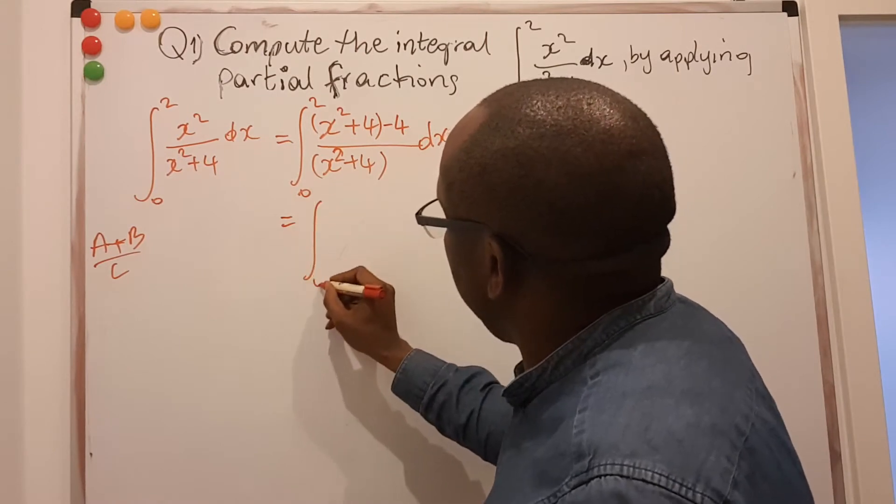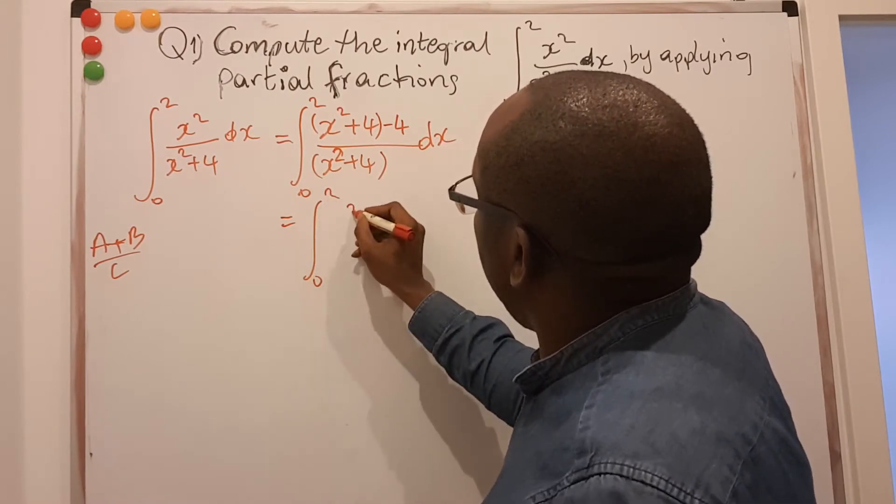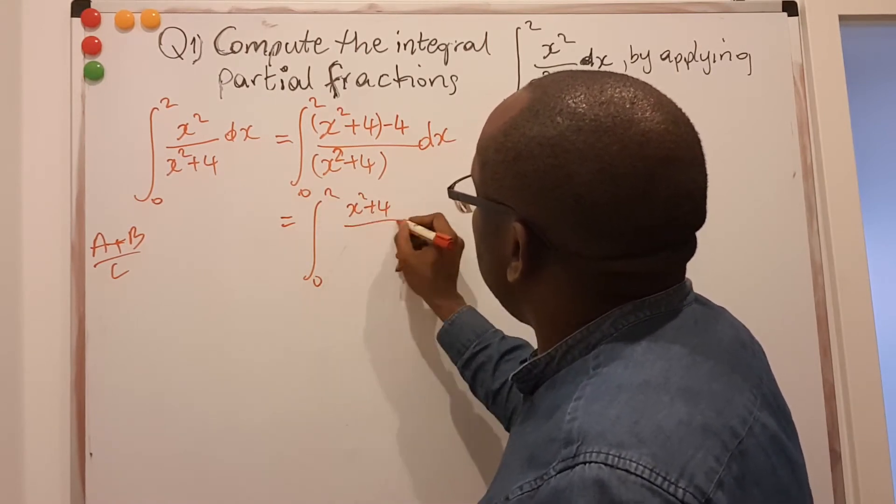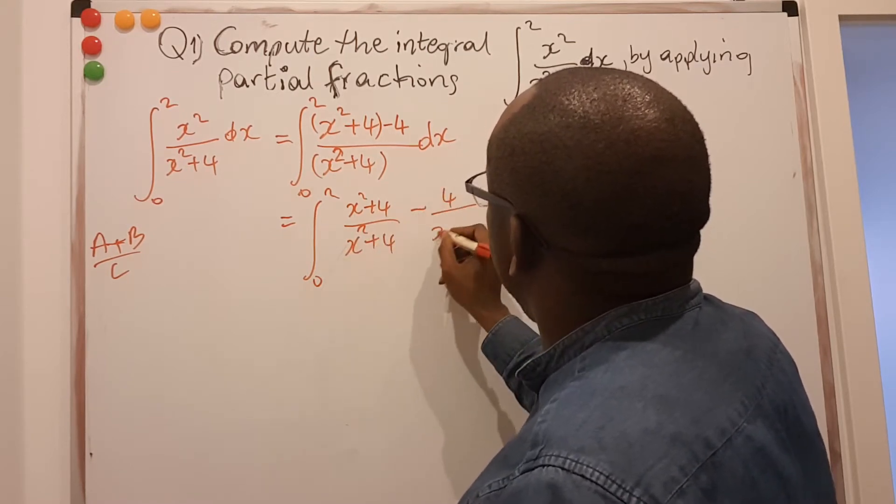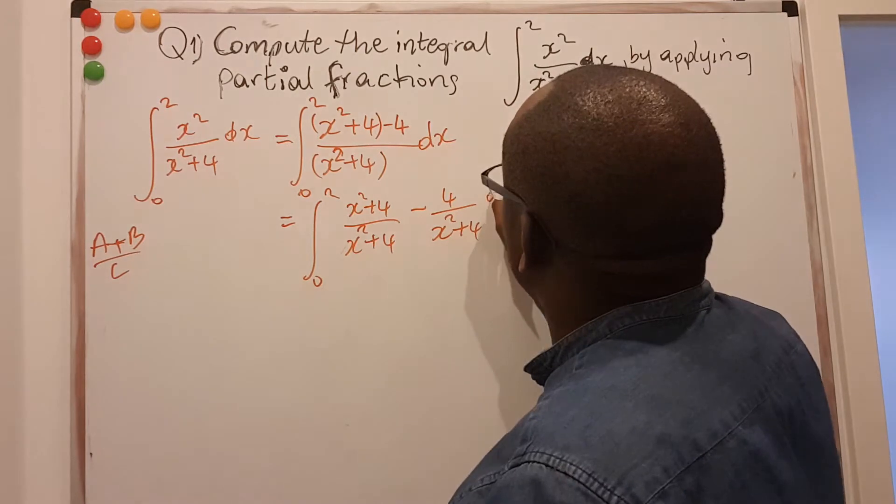So this is the integral from 0 to 2 of x squared plus 4 divided by x squared plus 4 minus 4 divided by x squared plus 4 dx.